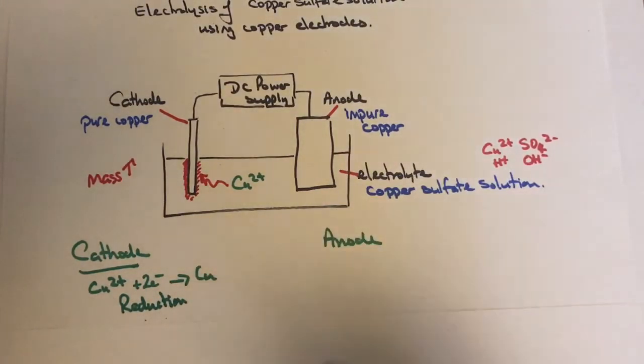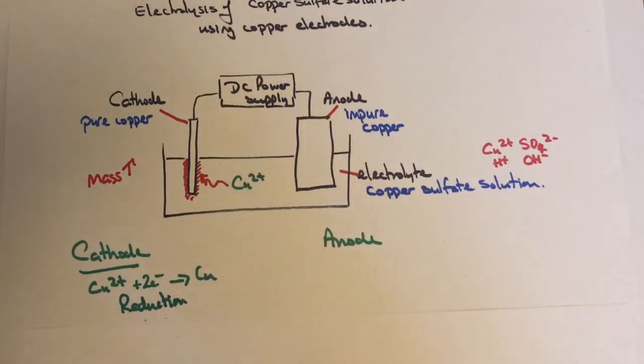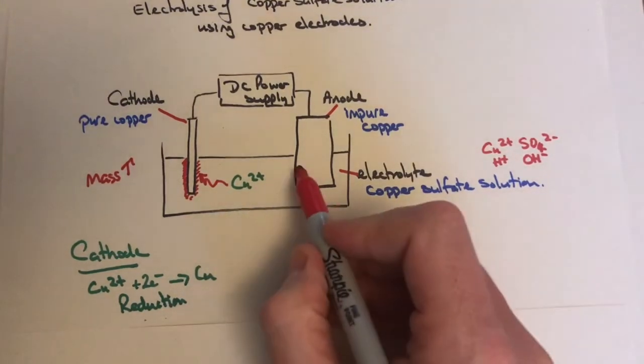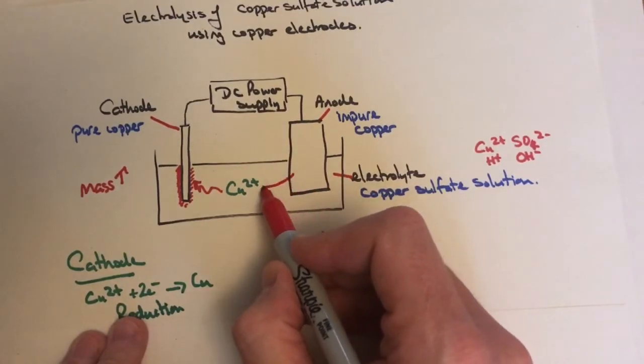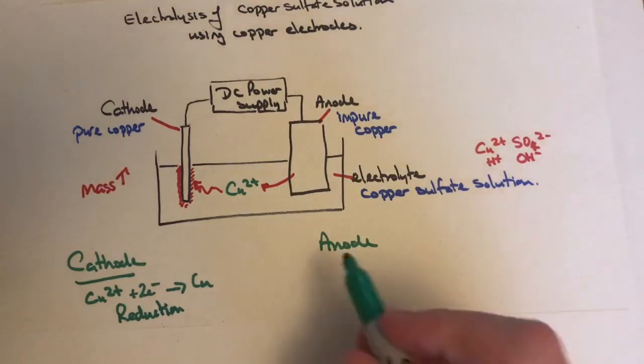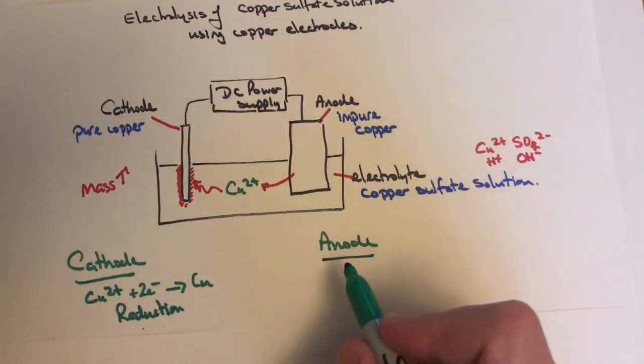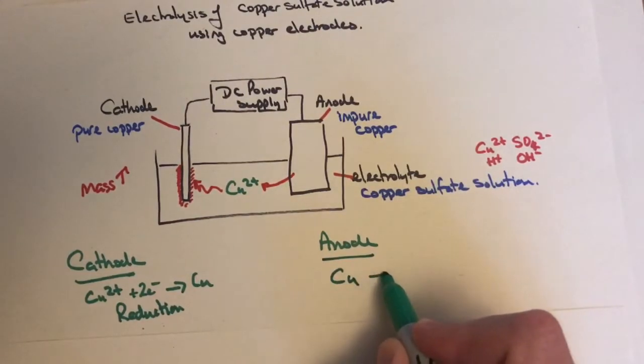If we're losing copper from the solution, we have to replace it. The impure copper at the anode breaks down and forms new copper ions in the solution.